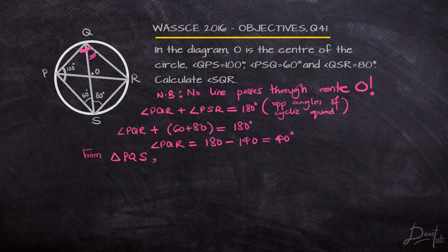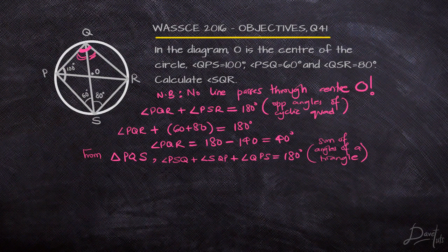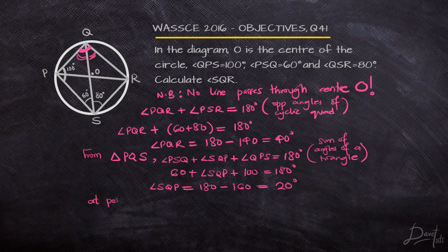From triangle PQS, we know we have 100 degrees as one angle and 60 degrees as another. We can find angle PQS by using the fact that angles in a triangle sum to 180 degrees — adding PSQ, SQP, and QPS together. That gives us angle SQP. Remember, SQP is one of the angles that makes up the 40 degrees we already found. Since we now have angle SQP defined as 20 degrees, and both SQP and SQR together constitute angle PQR, we can find SQR.